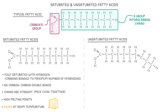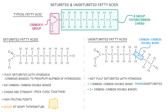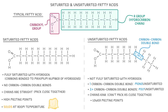On the other hand, unsaturated fatty acids have hydrocarbon chains that are not fully saturated with hydrogen and they have at least one carbon-carbon double bond. If there's only one carbon-carbon double bond, it's called a monounsaturated fatty acid. But if there are two or more carbon-carbon double bonds, it's called a polyunsaturated fatty acid. Importantly, the angle of these carbon-carbon double bonds causes the chains to kink, meaning they can't pack as close together as saturated fatty acids can. So lipids with unsaturated fatty acids have lower melting points, making them liquids at room temperature.